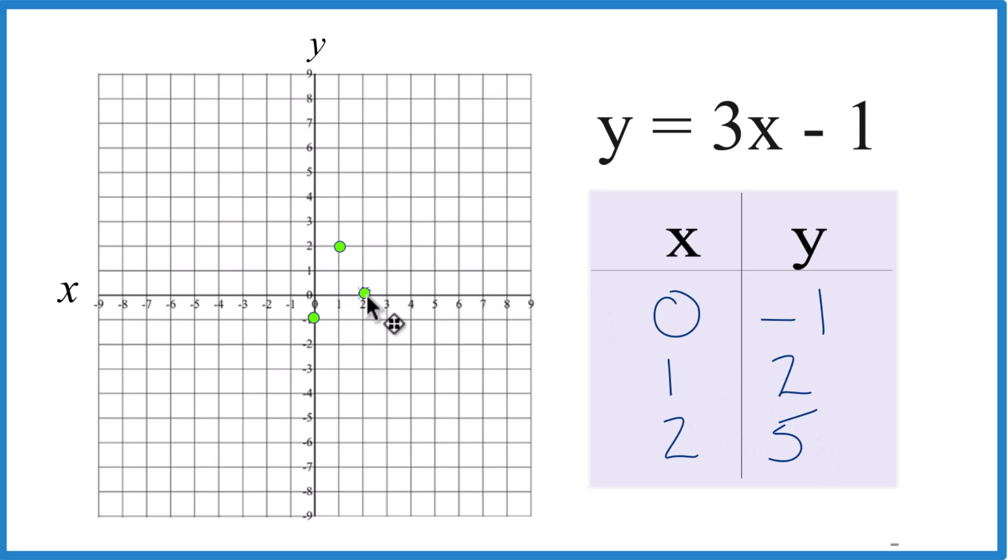x is 2, y is 5. So 2, 5, and there you can see our line for y equals 3x minus 1.